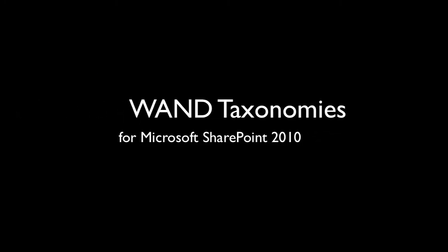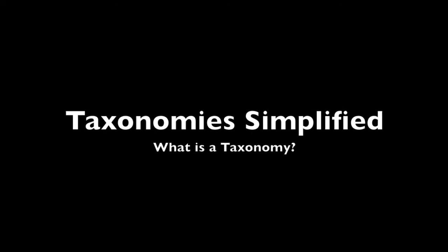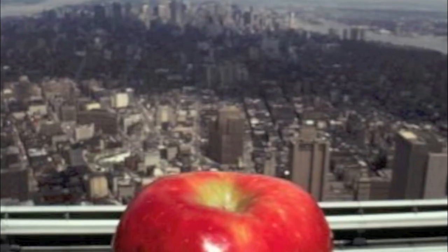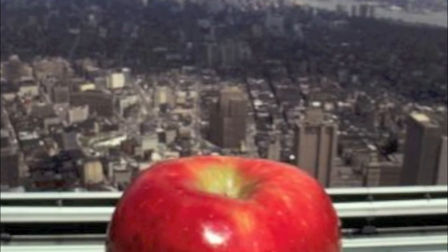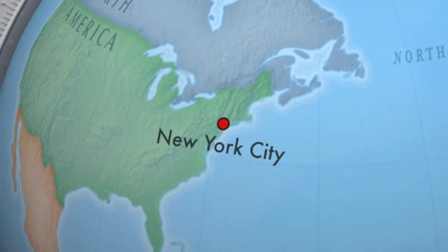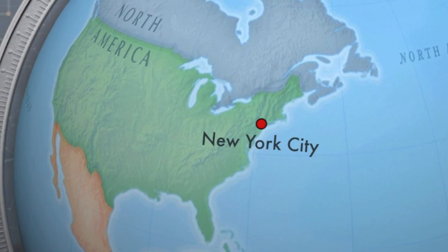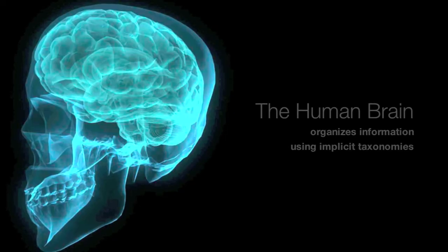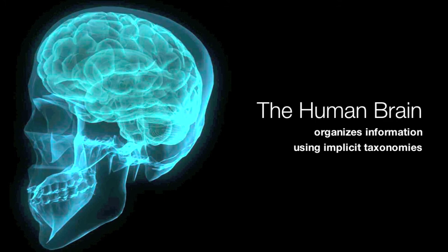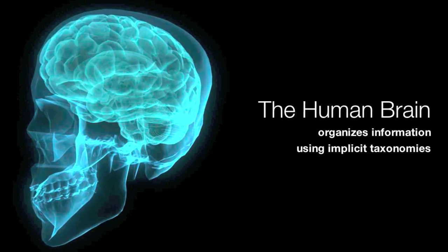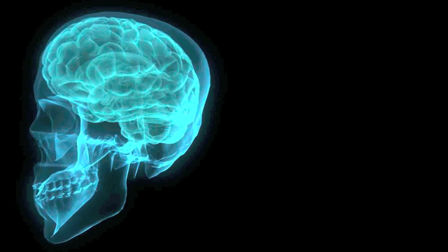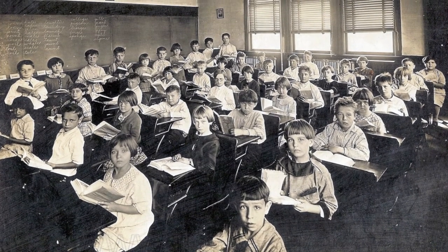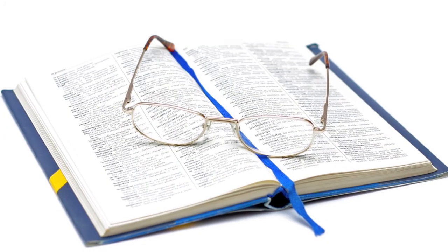What is a taxonomy? A taxonomy is a data model for unstructured information. If I said I'm going to be flying to the Big Apple next week, the human brain understands that the Big Apple means New York City, and New York City is a city in a state, a state is a narrower term to a country, and a country is a narrower term to a continent. The human brain organizes information using implicit taxonomies — continents, countries, states, cities.